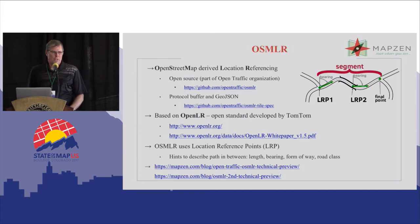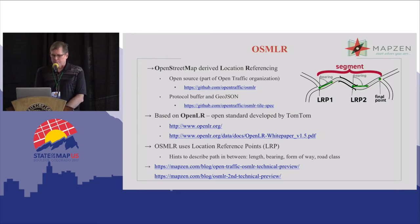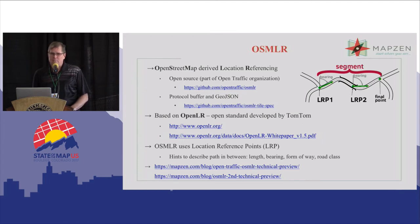The solution we've come up with we call OSMLR, which stands for OpenStreetMap derived location referencing. We developed this as part of the OpenTraffic project, and we have documentation on GitHub — it's all open source and readily available. We create these linear references in two different formats: one is protocol buffer, which is useful for integration with applications because it's very compact and quickly parsed, and we also output GeoJSON, which is much more interchangeable with other GIS tools.